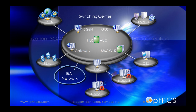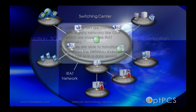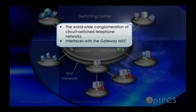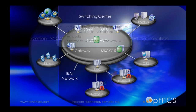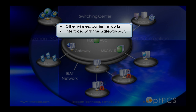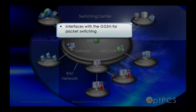Inter-Radio Access Technology: UMTS networks are compatible with legacy networks like GSM. These are known as IRAT networks. Mobiles are able to transition between the networks even while on a call or in a data session. The Public Switch Telephone Network (PSTN) is the worldwide conglomeration of circuit-switched telephone networks and interfaces with the Gateway MSC. The Public Land Mobile Network (PLMN) — other wireless carrier networks — also interfaces with the Gateway MSC. The Packet Switch Public Data Network interfaces with the GGSN for packet switching.